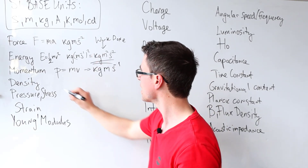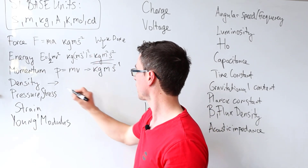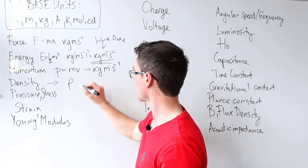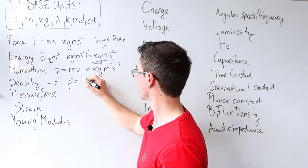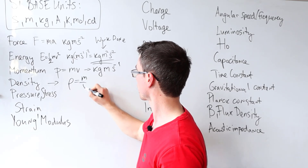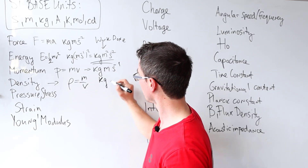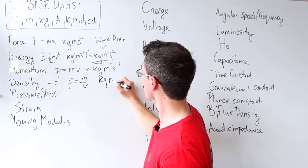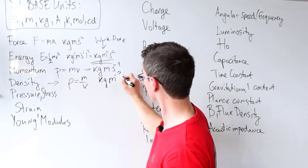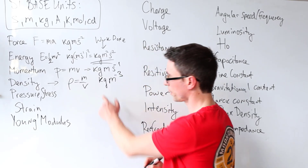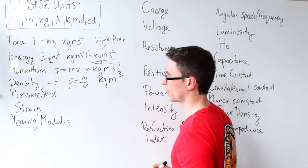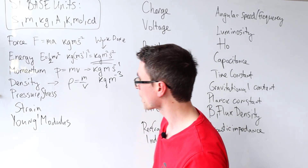Density — this is an easy one. That's mass per unit volume, so this will be kilograms per meters cubed because it's divided by volume.